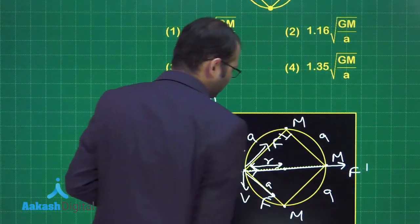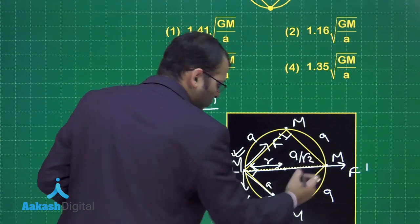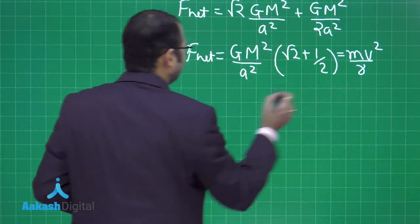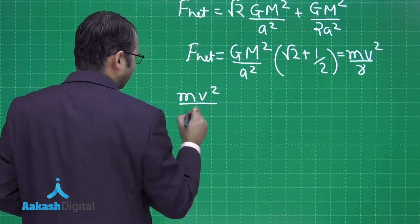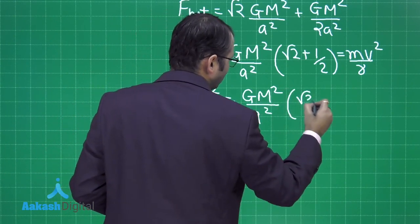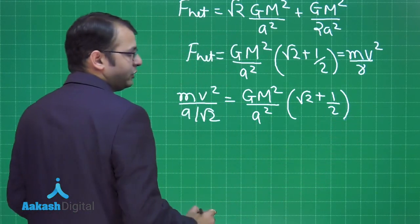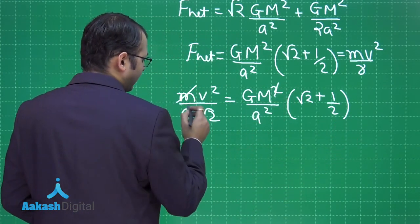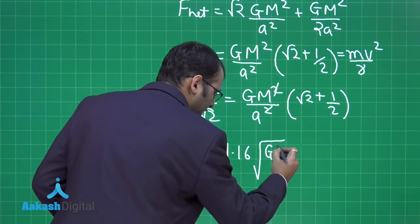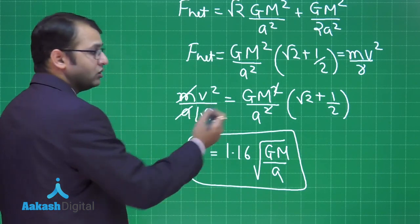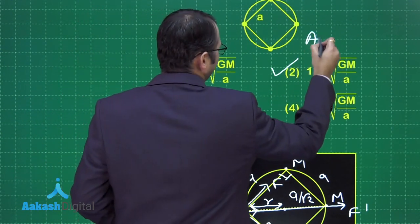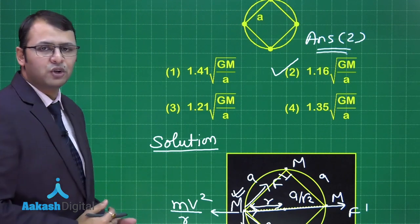Now what is the radius of this circle? If you see, the radius would be equal to A by root 2 because this whole distance is A root 2, that is divided by 2 for the radius. So putting down the values here, you will get MV square by A by root 2 is equal to GM square A square root 2 by 1 by 2. Now when you solve this, this will be cancelled out and this A and this will be cancelled out. What is left is V is equal to 1.16 under root of GM by A. This is our final answer when you solve this one. Let's see which is the best suited option here. Among the four options given to us, option number 2 is the right answer to this question. Now let's move on to our next question.